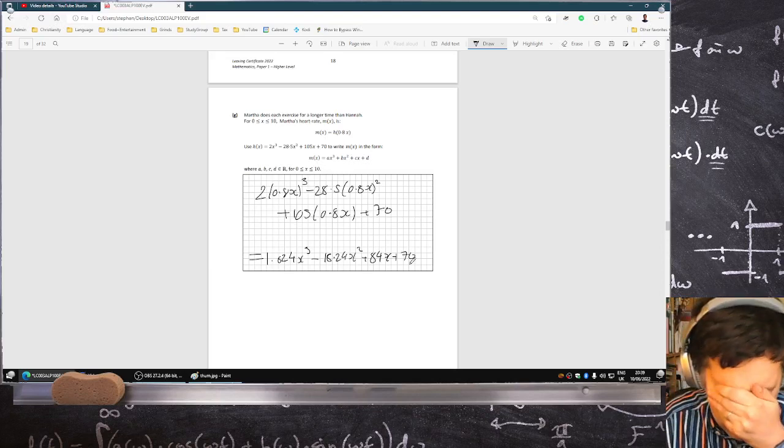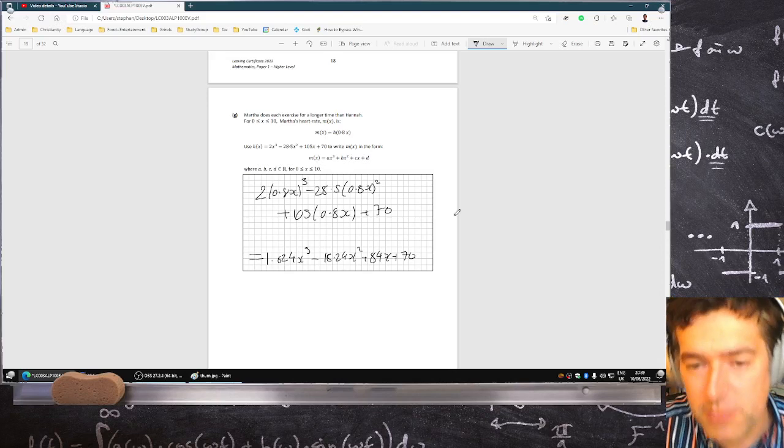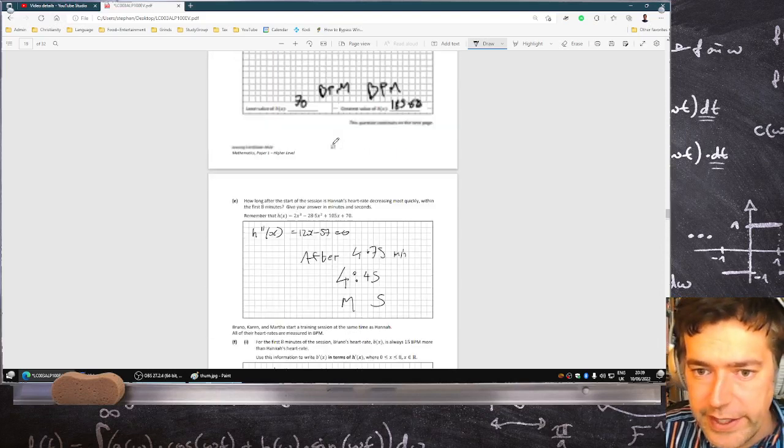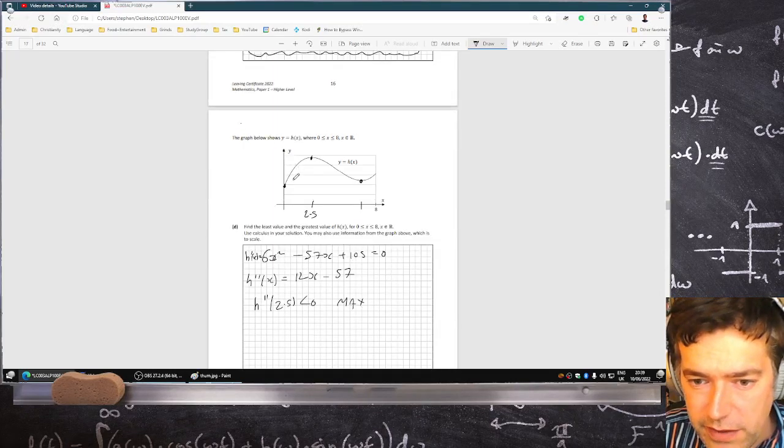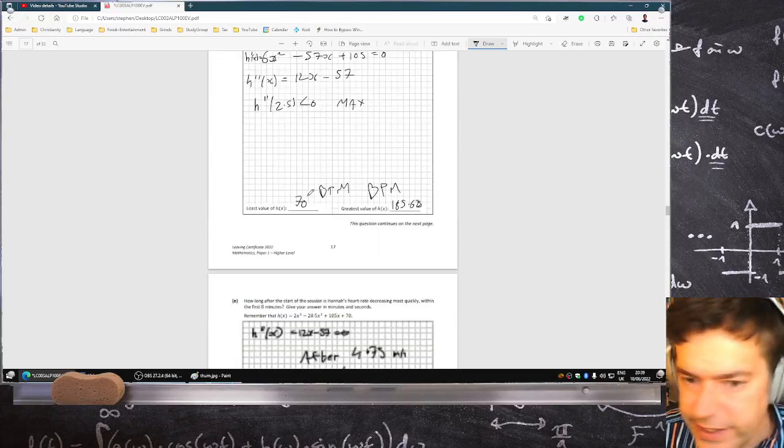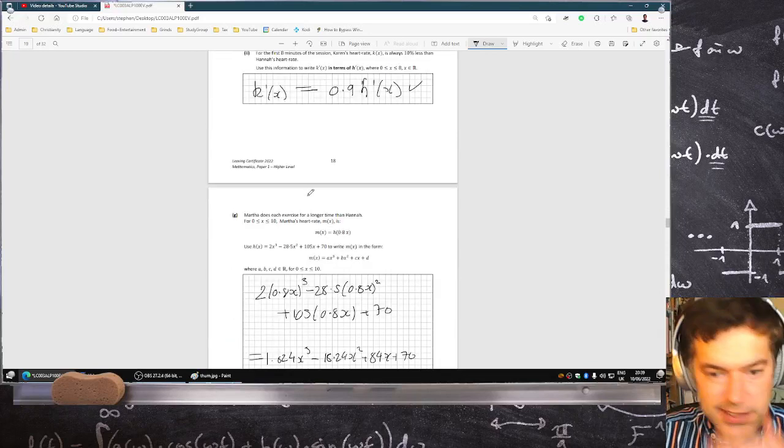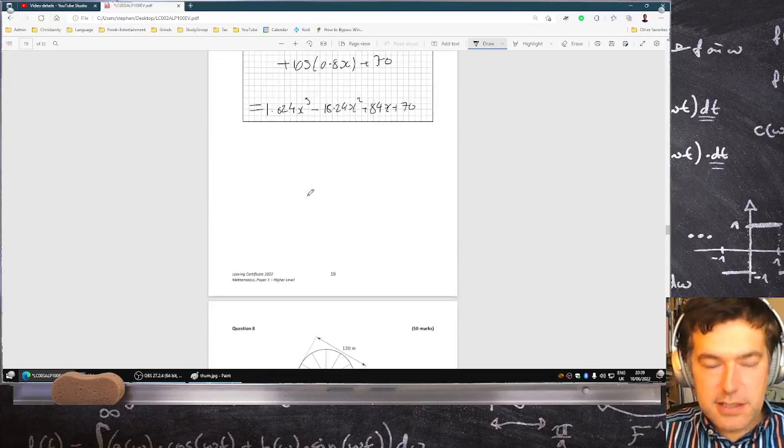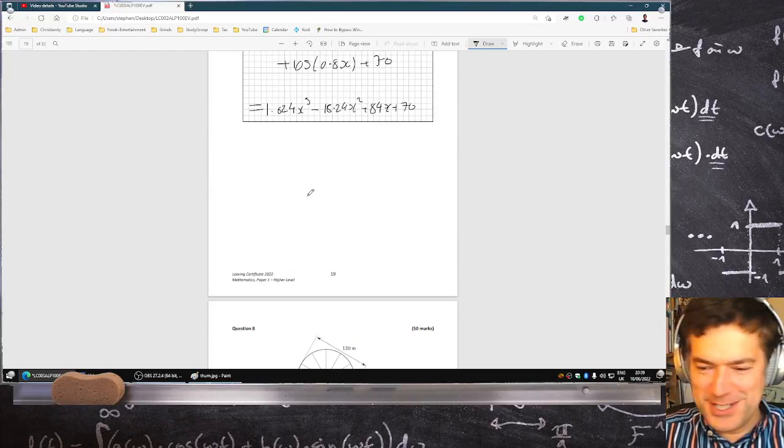Okay. Hopefully I fixed everything that was wrong with this question. Well, there was only one thing wrong the first time I did it. It was this blooming graph caught me out. Sneaky, sneaky, sneaky, sneaky, sneaky. All right. That's attempt two of question seven.